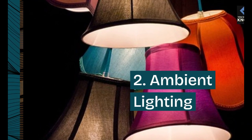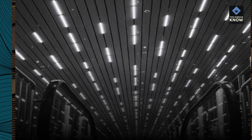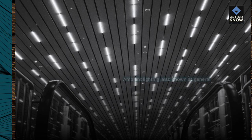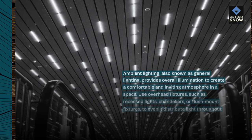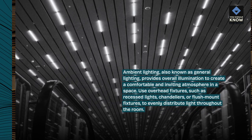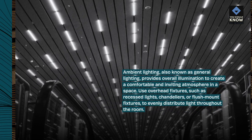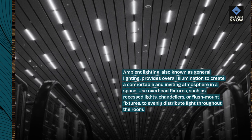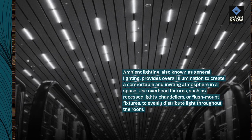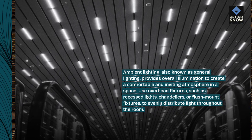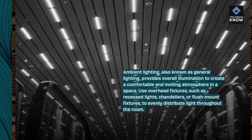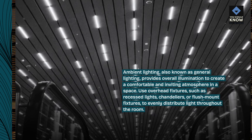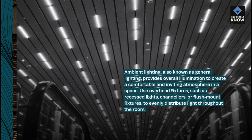Ambient lighting, also known as general lighting, provides overall illumination to create a comfortable and inviting atmosphere in a space. Use overhead fixtures, such as recessed lights, chandeliers, or flush mount fixtures, to evenly distribute light throughout the room.